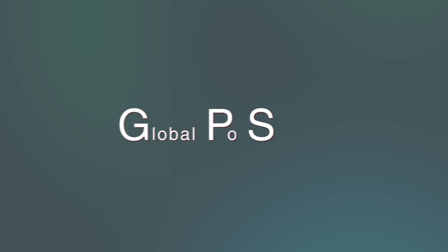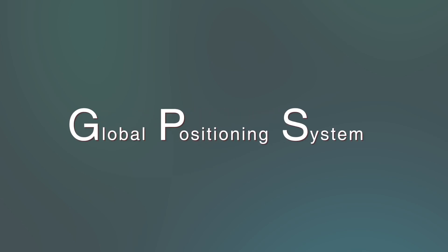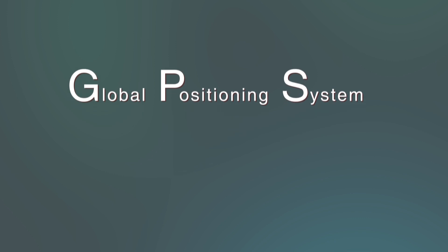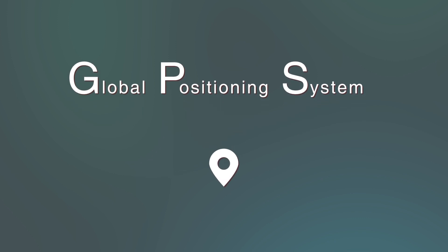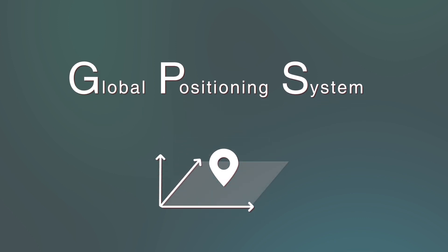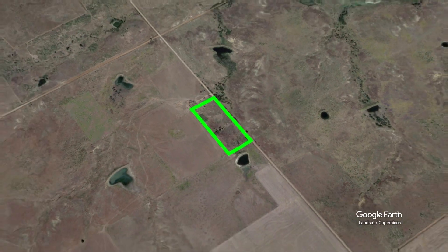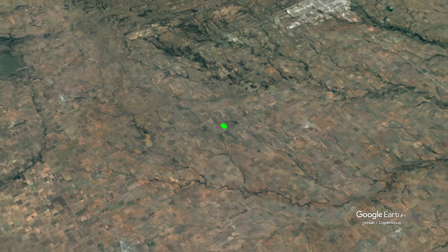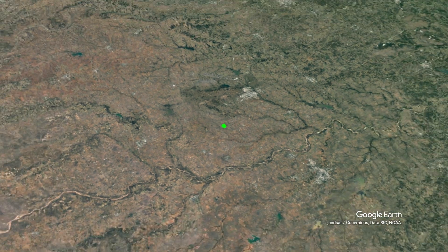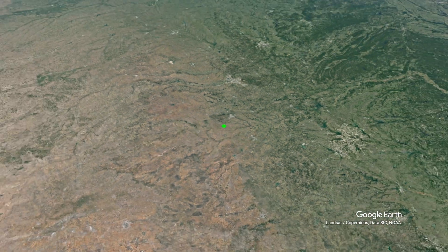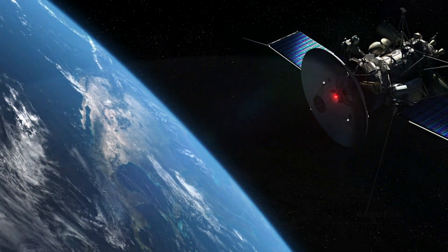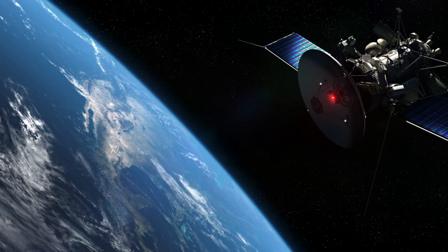GPS stands for Global Positioning System. It is used to determine a person's position in terms of latitude, longitude, and height coordinates anywhere on the globe. GPS coordinates are extremely useful when looking at land because it will take you to an exact location on the planet, regardless of a street address.